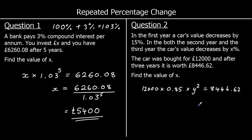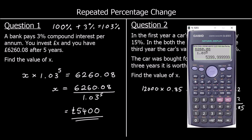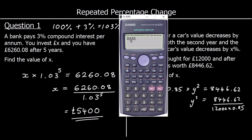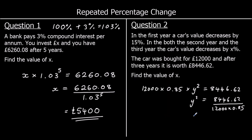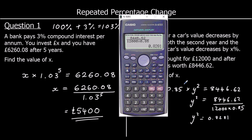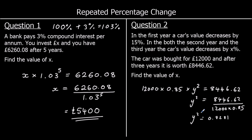Let's get y squared by itself. We divide both sides by 12,000 times 0.85 and type that into the calculator. That gives 0.8281, but that's y squared. To get y by itself we square root that, and our multiplier is 0.91.